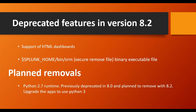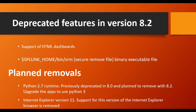A major talking point is Python 2.7 runtime. Many apps running Python 2.7 scripts will stop working. Python 2.7 runtime was deprecated in 8.0, and with 8.2 it will be completely removed — all apps using Python 2.7 will stop working and must migrate to Python 3. Additionally, Internet Explorer 11 support has been removed in 8.2. Some operating system versions are also in the deprecated list.